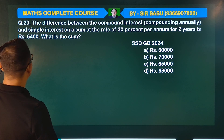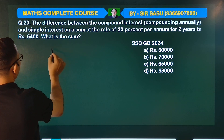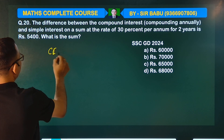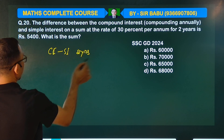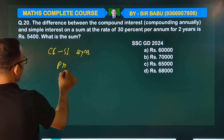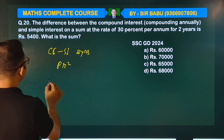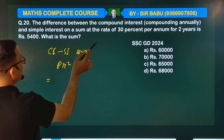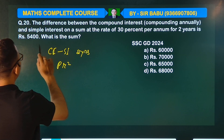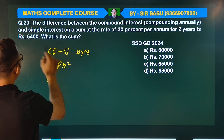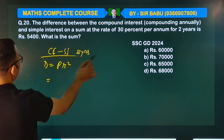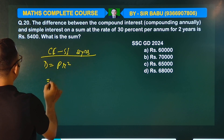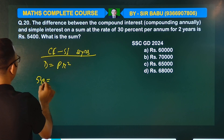The difference between the compound interest and simple interest on a sum at the rate of 30% per annum for two years is 5400. What is the sum? The formula for the difference is P times R squared.